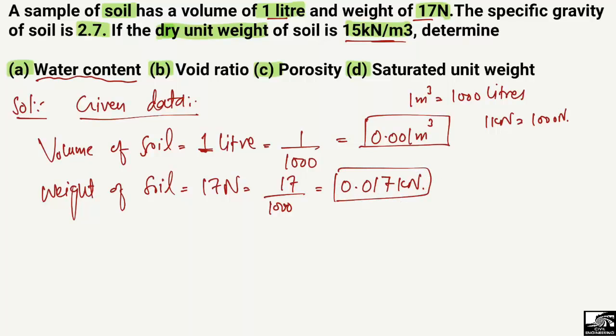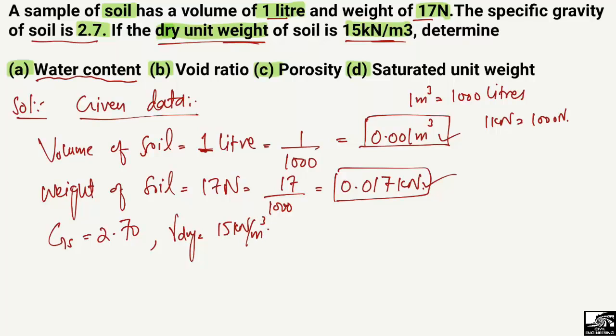Now we have the weight in kilonewton and the volume in cubic meters. The specific gravity G is 2.70, and the dry unit weight of the soil sample is 15 kilonewton per cubic meter.